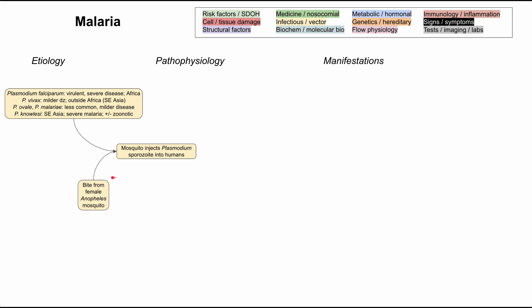In order to get malaria, you need mosquitoes, and these mosquitoes aren't found everywhere. You really only get malaria when you live in or travel to endemic regions — places where malaria already exists and thrives. These regions are typically tropical areas, most commonly Africa, Asia, and Central and South America. Although you might find mosquitoes in parts of Europe and the United States, malaria is rare there, and when it does occur it's usually from people who have traveled to endemic regions.